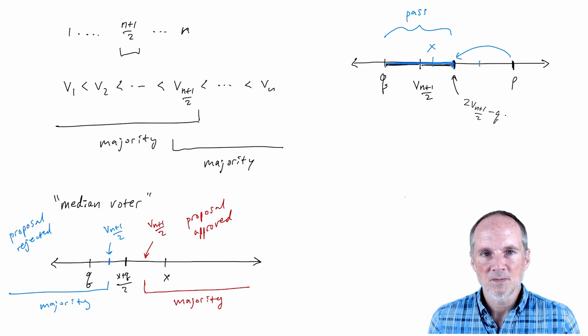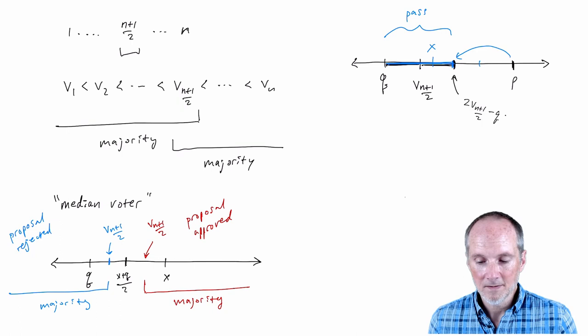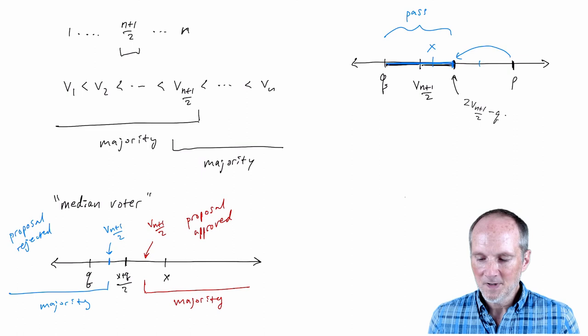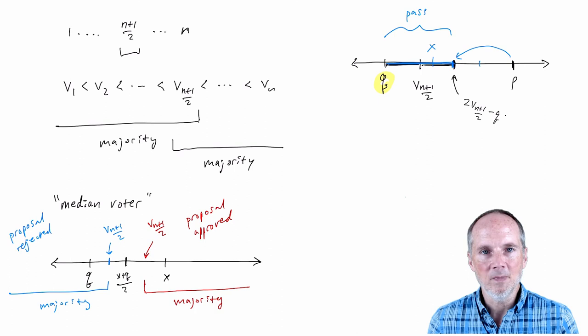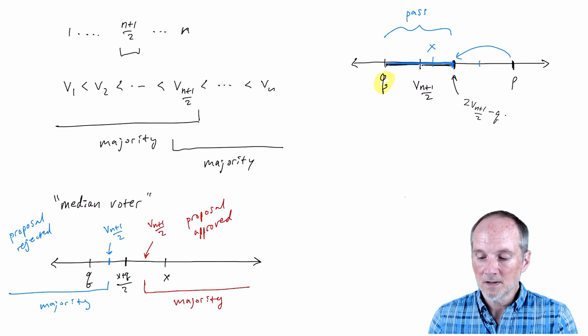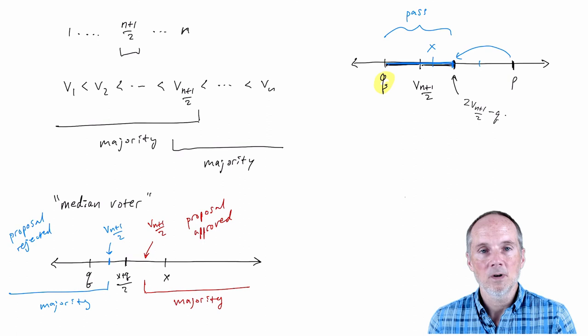In the next installment, I'm going to stick with this model a little more because it really is one of the most important models in politics. I'm going to ask: what about the status quo — where did that come from? Can we extend this model further and think about where it came from? We're going to endogenize the status quo. That's what's coming up next.